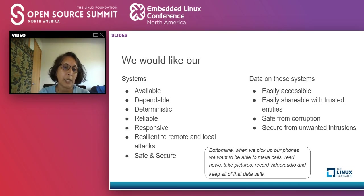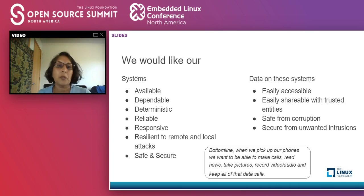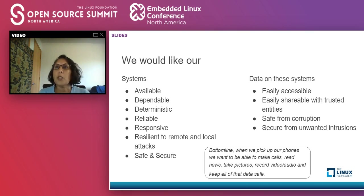We want our systems available and dependable. For example, we are here today and we have a lot of infrastructure helping us do so. We want our laptops and phones to be dependable — when we pick up our phone we want to make a phone call, read news, connect to the internet, take pictures, upload pictures from wherever we are. All of that happens because we have systems we can rely on, depend on, that are responsive. We also want our systems to be resilient to remote and local attacks.